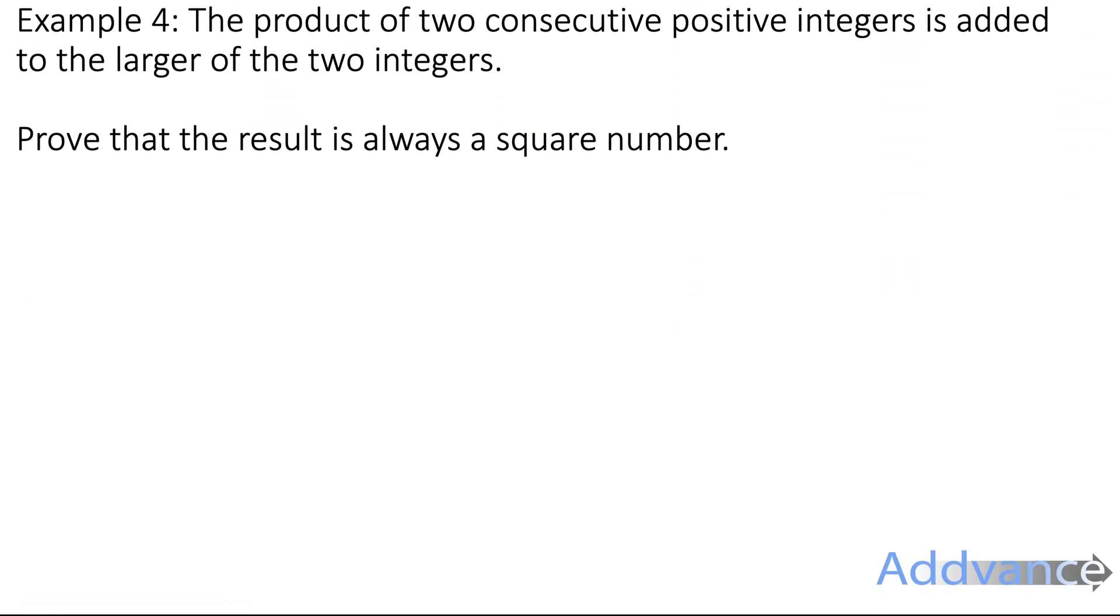Example 4. The product of two consecutive positive integers is added to the larger of the two integers. Prove that the result is always a square number. So a lot of these have quite wordy questions. So that first sentence, we need to understand what that means step by step. The product of two consecutive positive integers. Product means multiply. And two consecutive positive integers means two numbers next to each other.